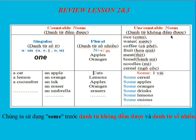For uncountable nouns, you use the word 'some' placed before the noun. For example, 'some' means 'một vài'. Examples: some cereal, some apples. Note: we use 'some' before both uncountable nouns and plural nouns. Remember this.